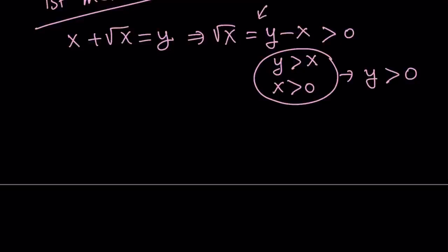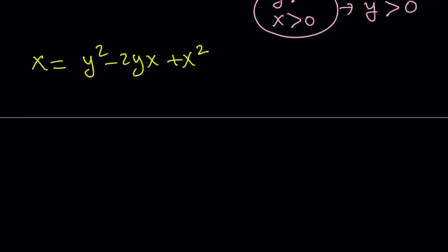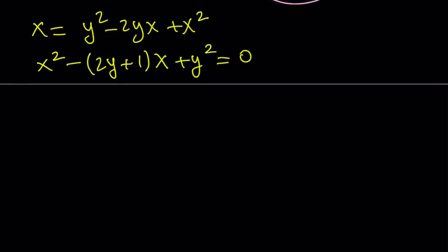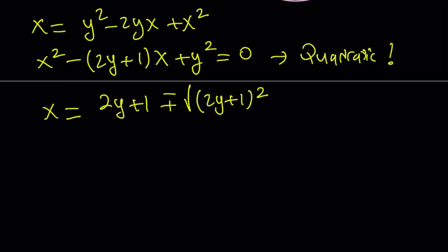If we square both sides, we get x = y² − 2y√x + x², which can be rearranged. Writing this as a quadratic equation in x by putting everything on one side gives us x² − (2y + 1)x + y² = 0. To solve for x, I'm going to apply the quadratic formula, which will give us two solutions, and I'll be checking both.